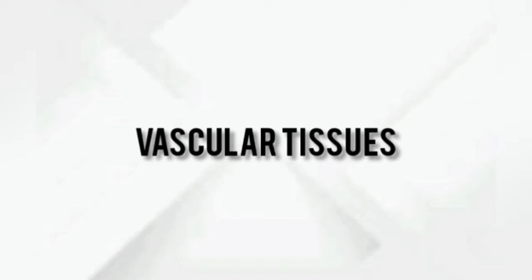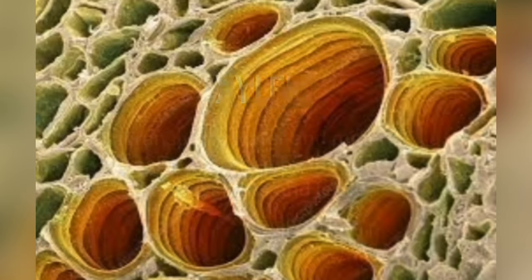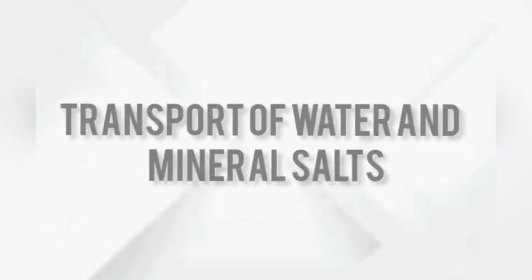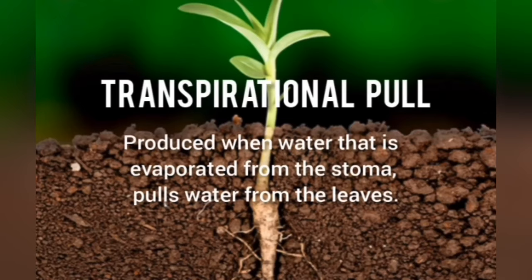There are two types of vascular tissues. Xylem transports water and mineral salts absorbed by the roots to the stems and leaves. Phloem transports organic compounds synthesized by the leaves through photosynthesis to the stems and roots.